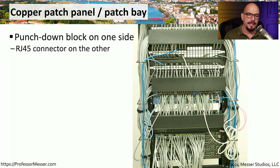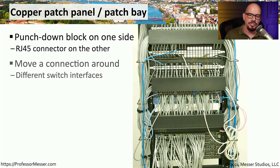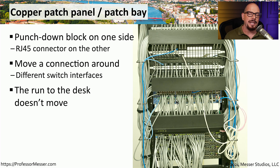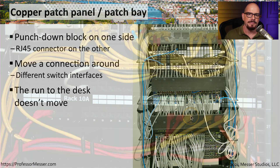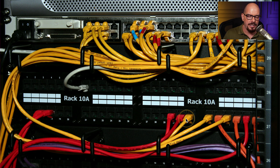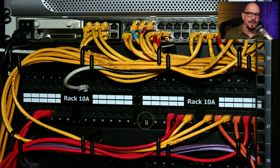Here's what this patch panel looks like in our IDF. You can see on this side of the patch panel we have the RJ45 connections, and we're coming out of those RJ45 connections and plugging them into the switches that are directly underneath. This means we can keep all of those cables in place between the patch panel and the desk out on the floor — all we have to change are the internal connections inside of our IDF. Here's another view of a patch panel connecting directly to the switch above it, and notice there are numbered connections on the patch panel so we know exactly which desk we're connecting or disconnecting.